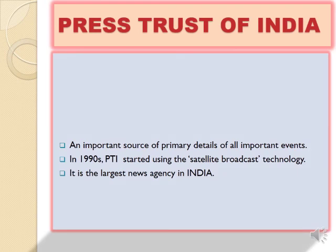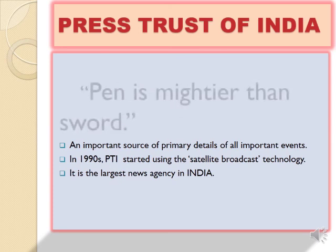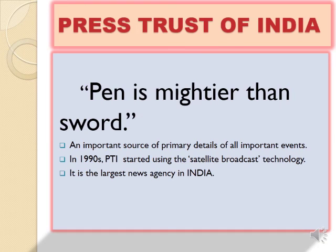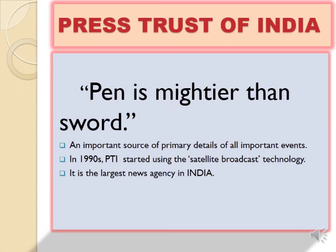Just as newspapers are considered the fourth pillar of democracy in the modern period, they are also a major medium of information. If we consider the period from 1961 to 2000, in the beginning there was no alternative to the print media, especially newspapers. Through newspapers, we can get information about national and international affairs, politics, art, sports, literature, and social and cultural affairs. After 1953, the Press Trust of India has been an important source of primary details of all important events. The press played a strong role in building up national sentiment and consciousness among the Indian people. It is rightly said that the pen is mightier than the sword.